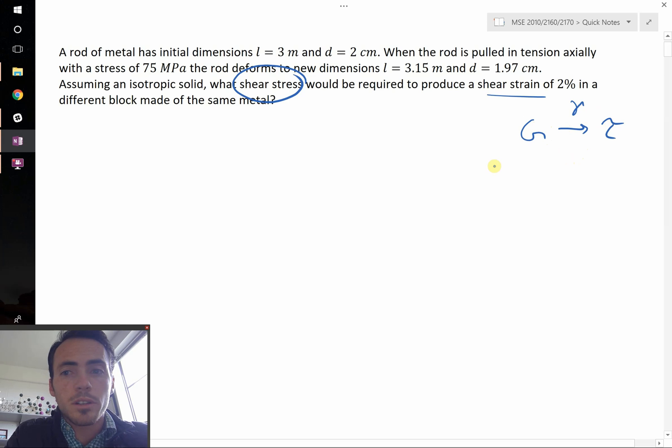So how do we get to modulus? Well, to get modulus, we're initially given dimensions and a stress, so that stress is going to give us Young's modulus. And so if you have Young's modulus, and you have an isotropic material, in order to get the shear modulus, we know that we're going to need the Poisson's ratio. Those two things together is going to get us to the shear modulus.